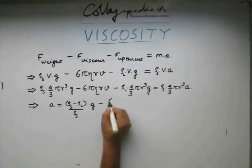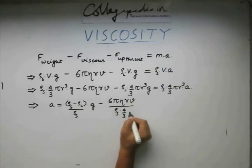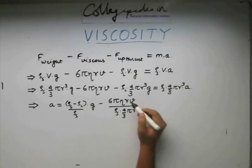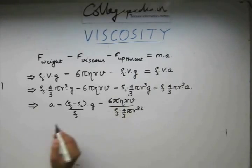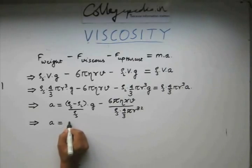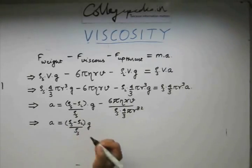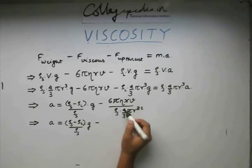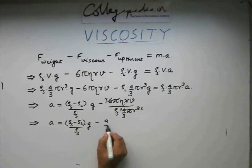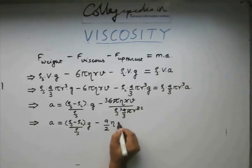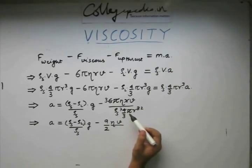This is going to be minus 6πηrv divided by ρs times 4 by 3πr³. We see 1r cancels off. We have this π cancelling off. What we are left with is a is equal to (ρs - ρl) by ρs times g minus, this three can be taken upwards, this can be reduced further, we have 9 by 2 ηv divided by ρs into r².